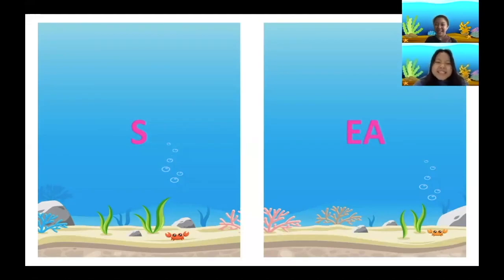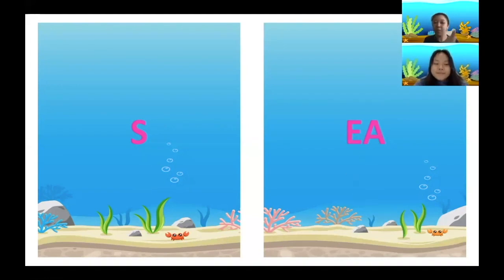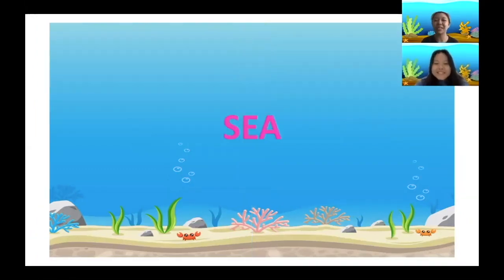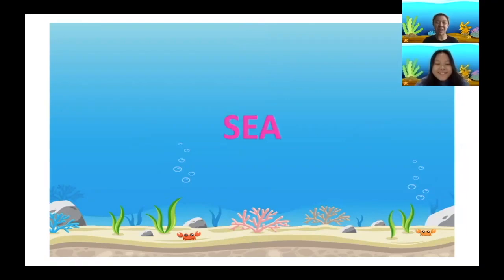Yay, kids! We found all two sounds of the word: S, E. What word does that make? Yes, good job — the word is 'sea'! Let's say it together: sea! Good job, kids! Now we have our sea back. Everyone, give yourselves a clap!